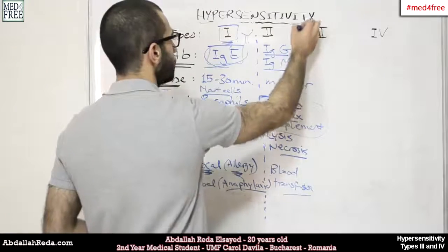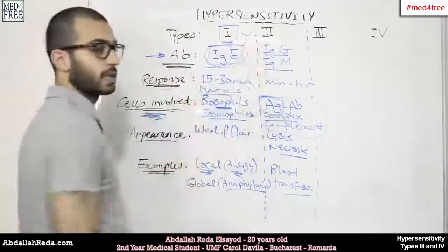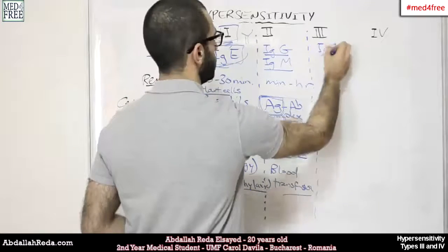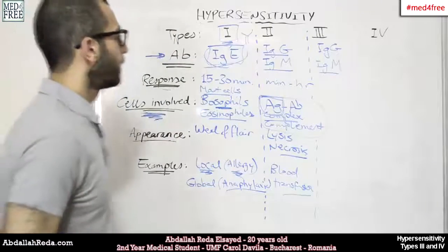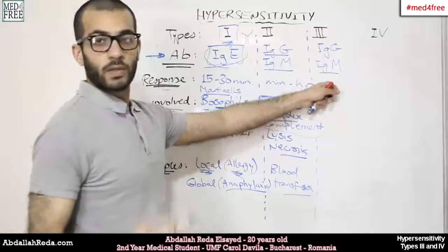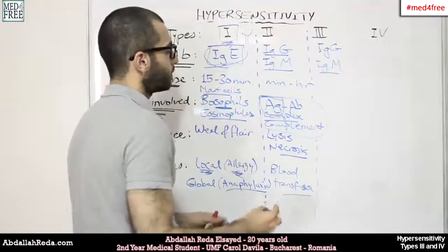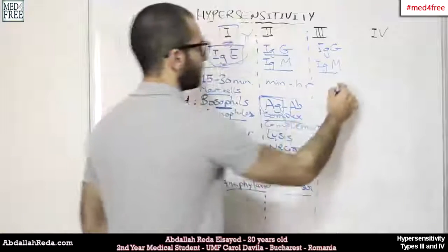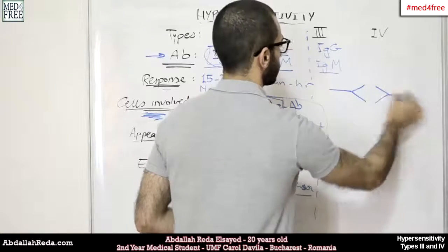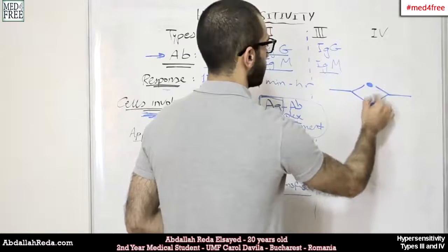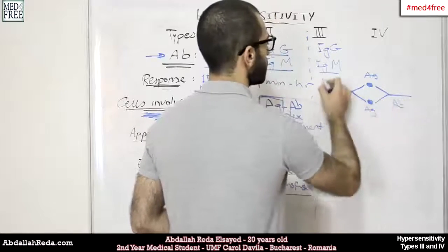The third type of hypersensitivity involves the same kind of antibodies as the second type. So we still have IgG and IgM, but the difference is the antigens themselves are not expressed on the cells. This means that the antigen-antibody complexes form freely. Here we have antigens and these are the antibodies — this is called a complex.